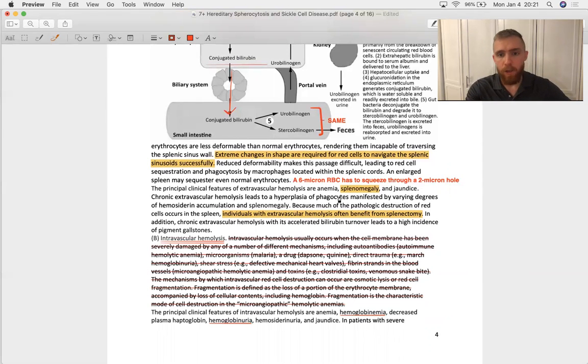Now, if this happens enough, you're going to get some degree of splenomegaly. Think traffic jam, think backup, right? It's going to engorge because there's going to be so many obstructed sinusoids in such a degree of hemolysis that the spleen will just swell with edema.